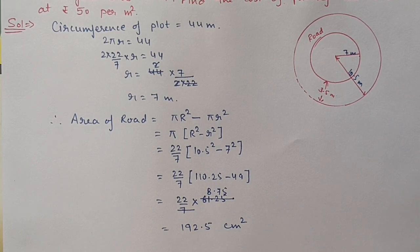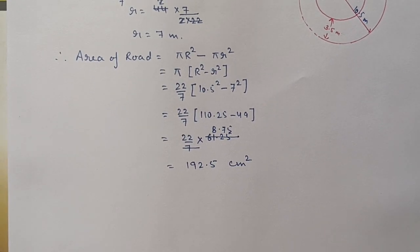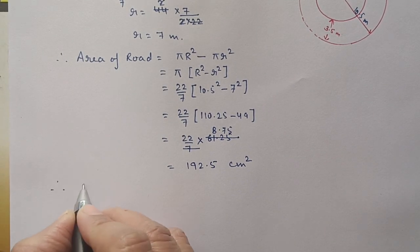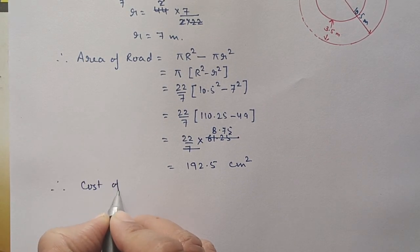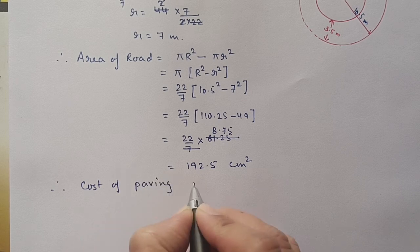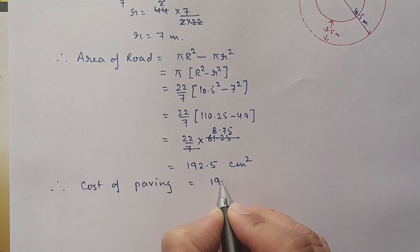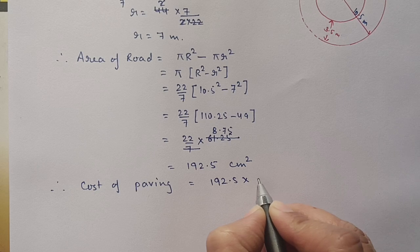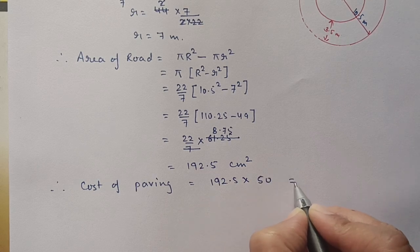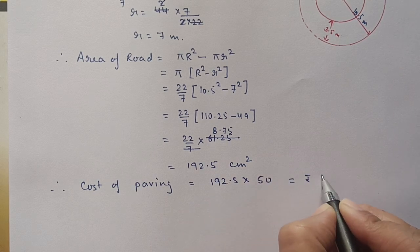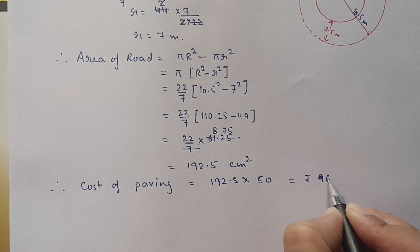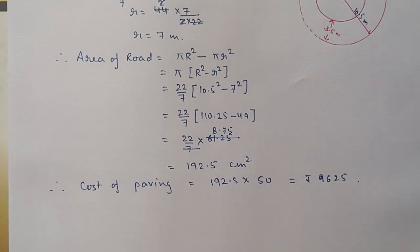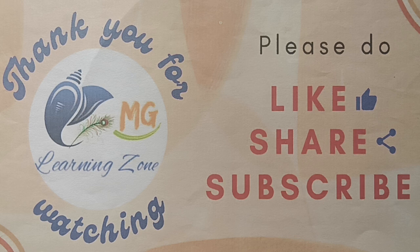This is the area of the road. To find the cost of paving: cost = area × rate = 192.5 × 50 = 9625 rupees. In this video we covered up to here; remaining questions will continue in the next video. Thank you for watching.